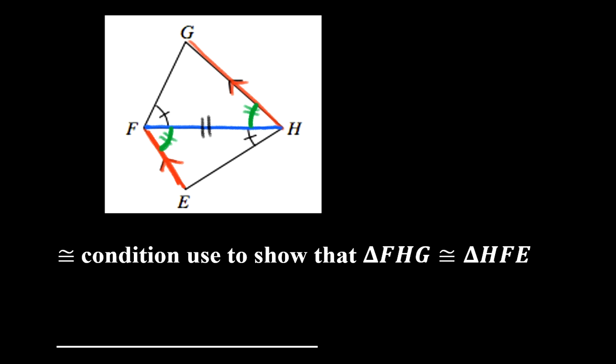So if you look at what we have here, we have exactly angle-side angle. So we can write, that's our reason. These two triangles are congruent because of ASA.